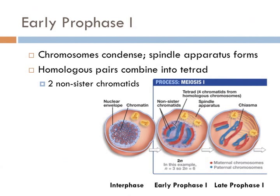In the first stage of meiosis I, known as early prophase I, the nuclear envelope disintegrates as the chromosomes condense from a spaghetti-like substance into visible, dense, linear structures. In addition, the spindle apparatus begins to form, and microtubules begin to grow from the centrioles, much like in mitosis.